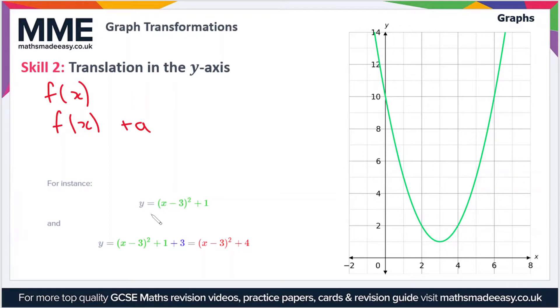For instance, if we have the graph of y = (x - 3)² + 1, that's the one on the right here. And we add plus 3 onto the end, so our a value in this case is this 3 on the end. That simplifies to (x - 3)² + 4.